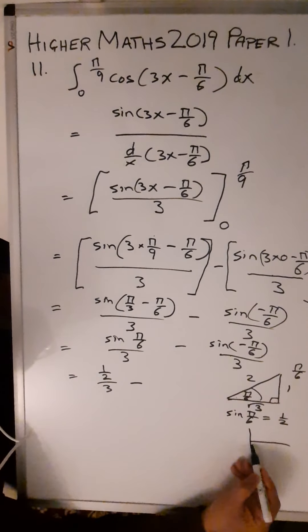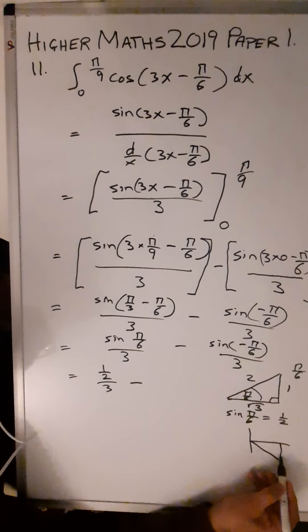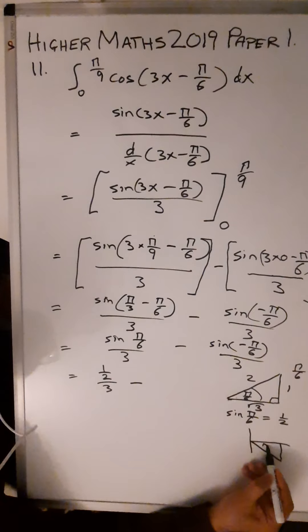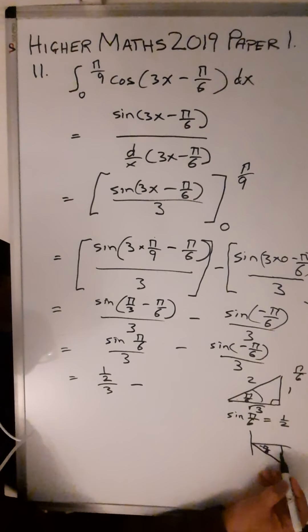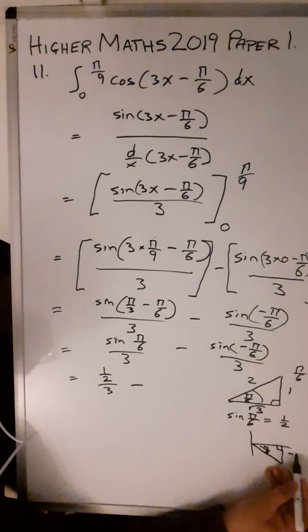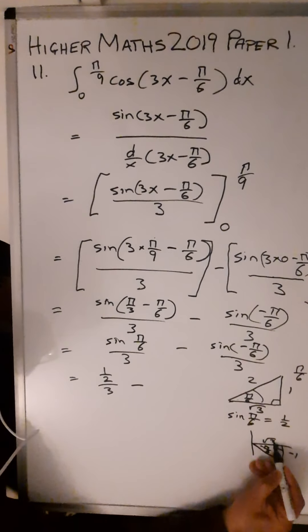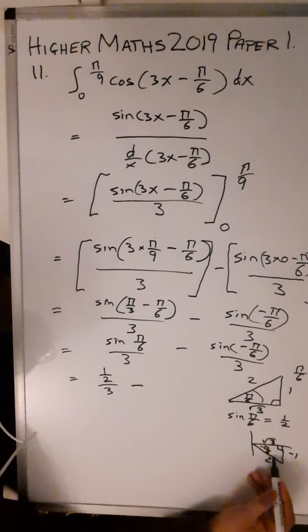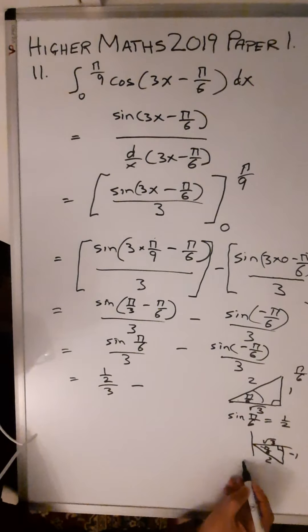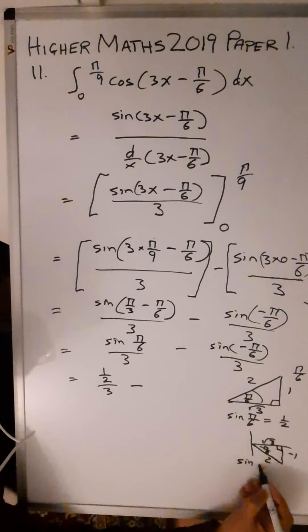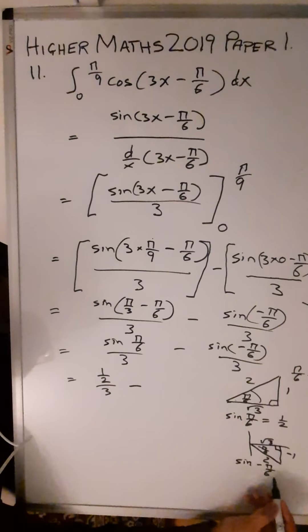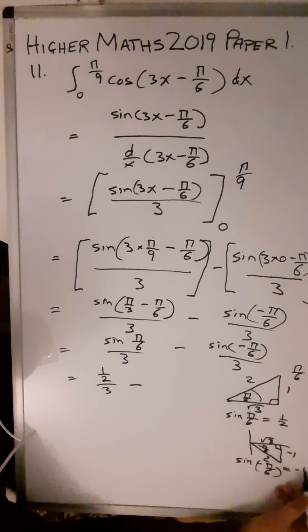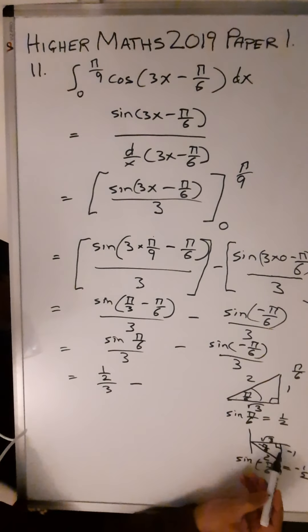sin(-π/6) is just -1/2, that puts it into the fourth quadrant. So you end up with that same triangle but down here. This is your π/6, this is -π/6 here. So opposite this you have -1, √3, and 2. So sin(-π/6) is -1/2.